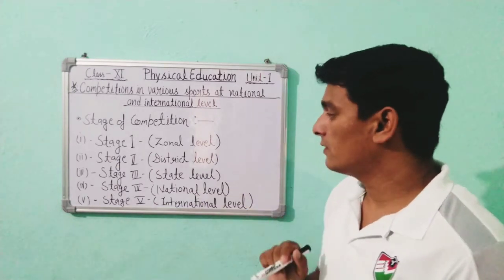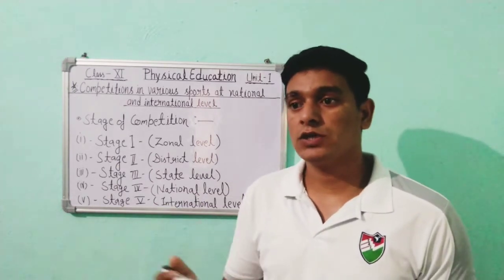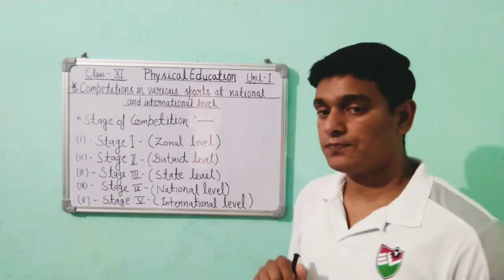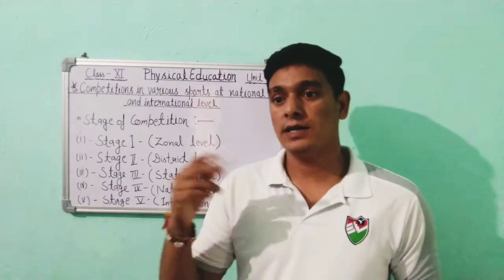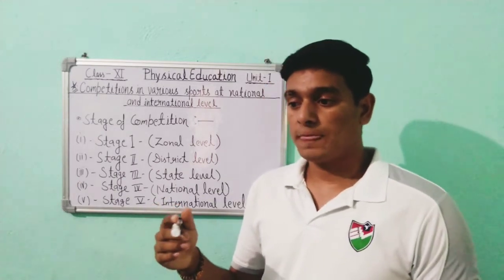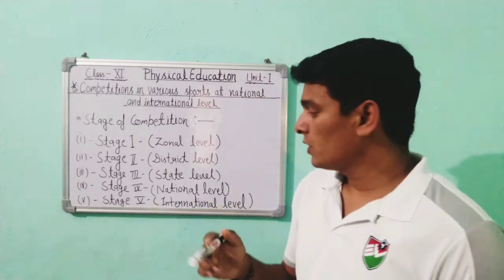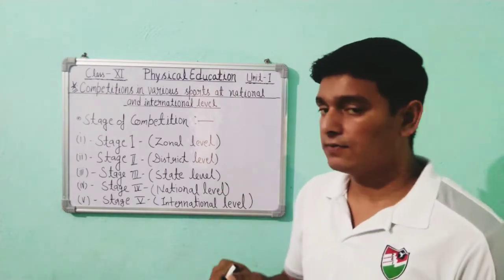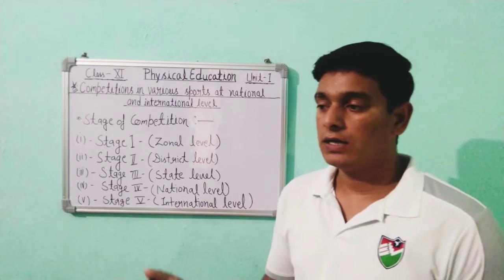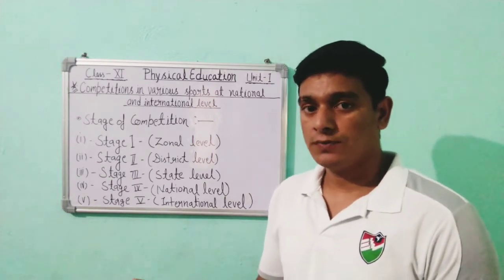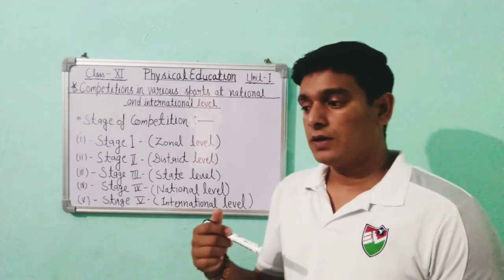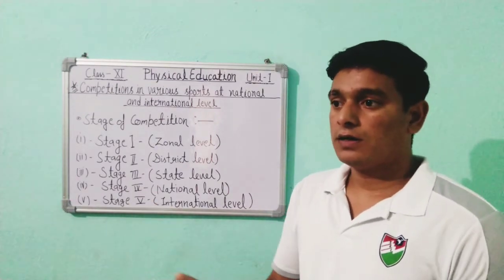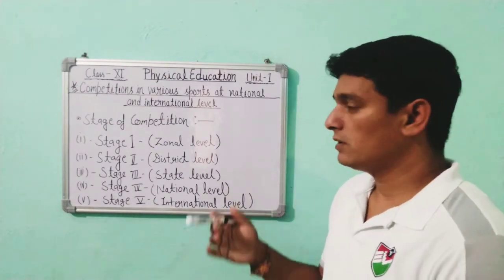Stage four is the National level, where teams representing their states participate. India has 29 states and most of them participate at the national level. For example, Uttarakhand's team will represent Uttarakhand, UP's team will represent Uttar Pradesh, and Haryana's team will represent Haryana. All these teams compete with each other at the national level.